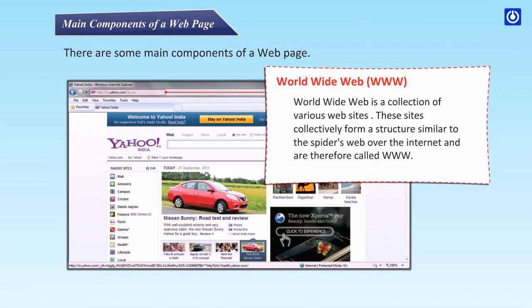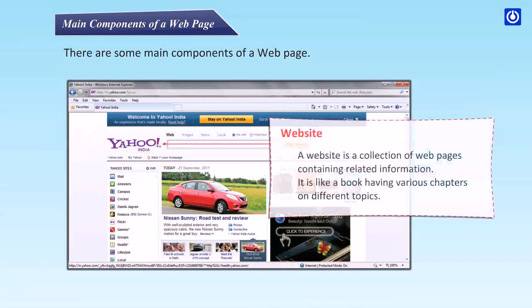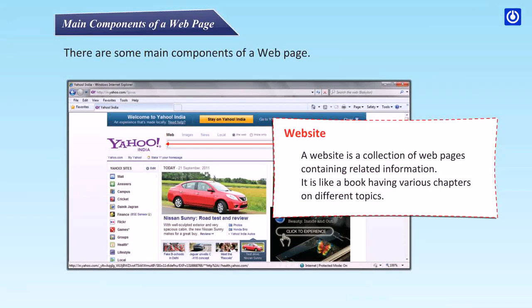The World Wide Web is a collection of various websites. These sites collectively form a structure similar to a spider's web over the internet and are therefore called the WWW. A website is a collection of web pages containing related information — it is like a book having various chapters on different topics.